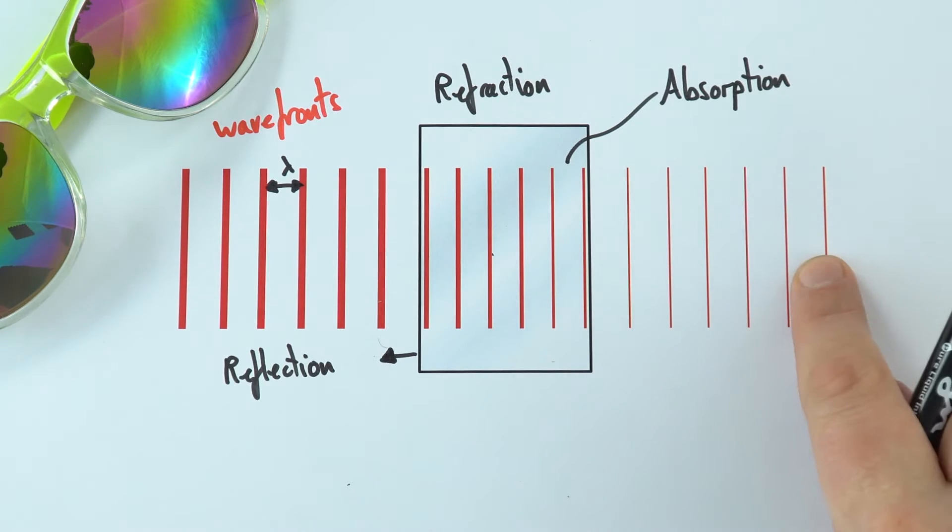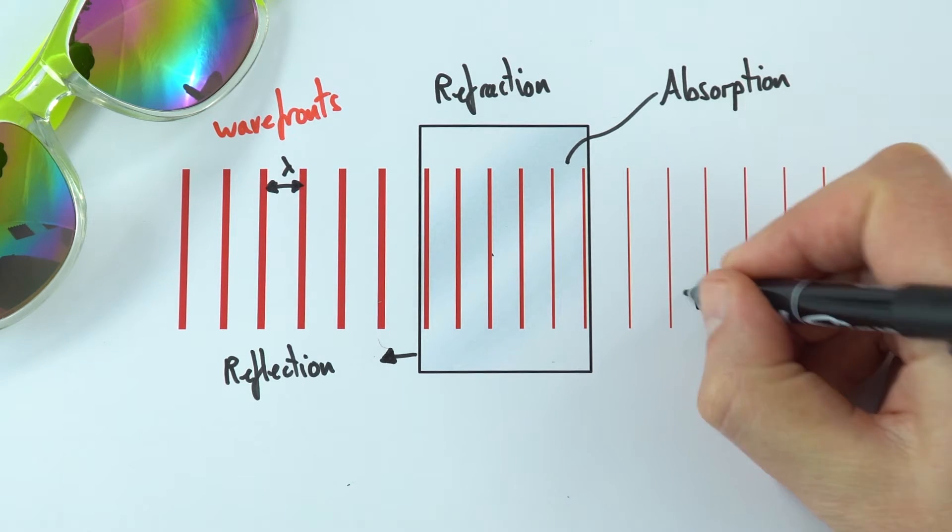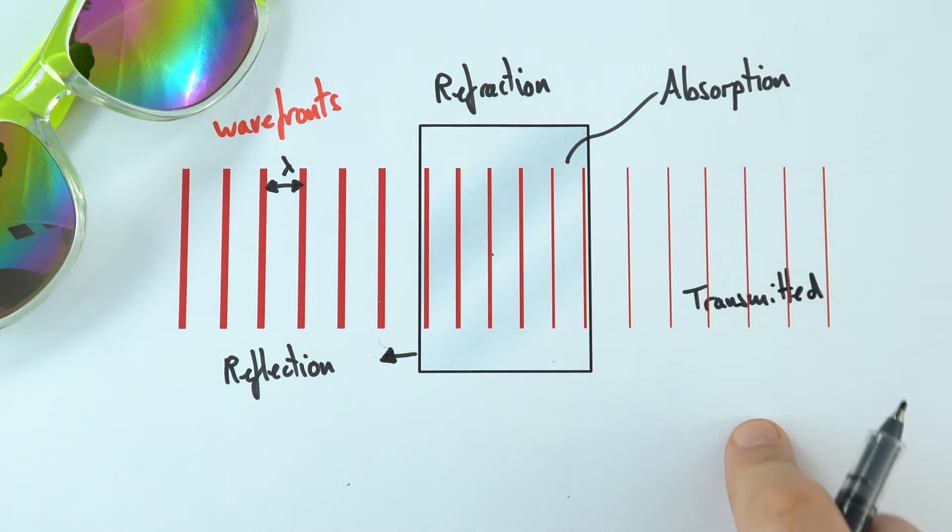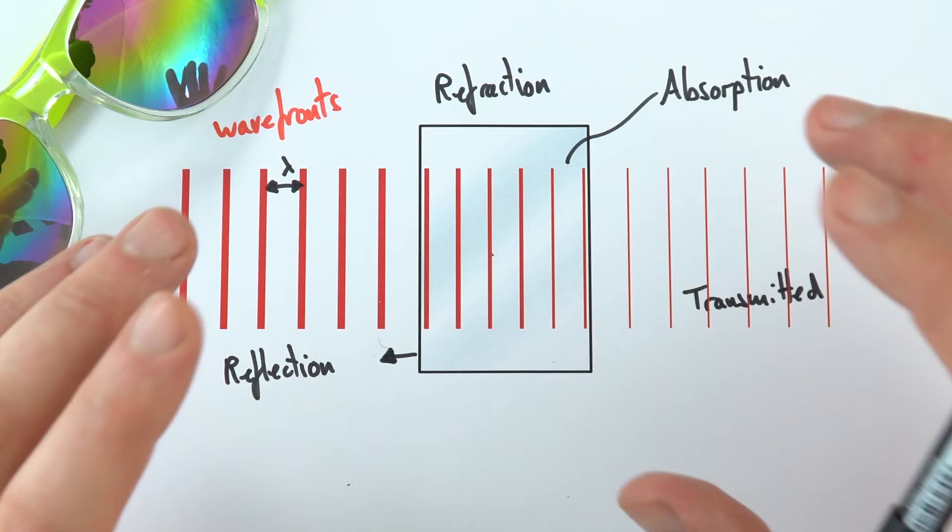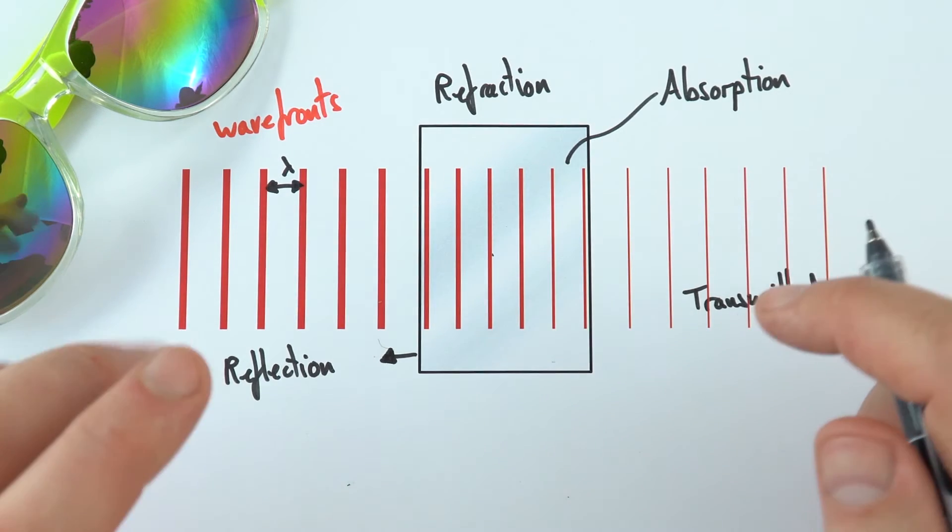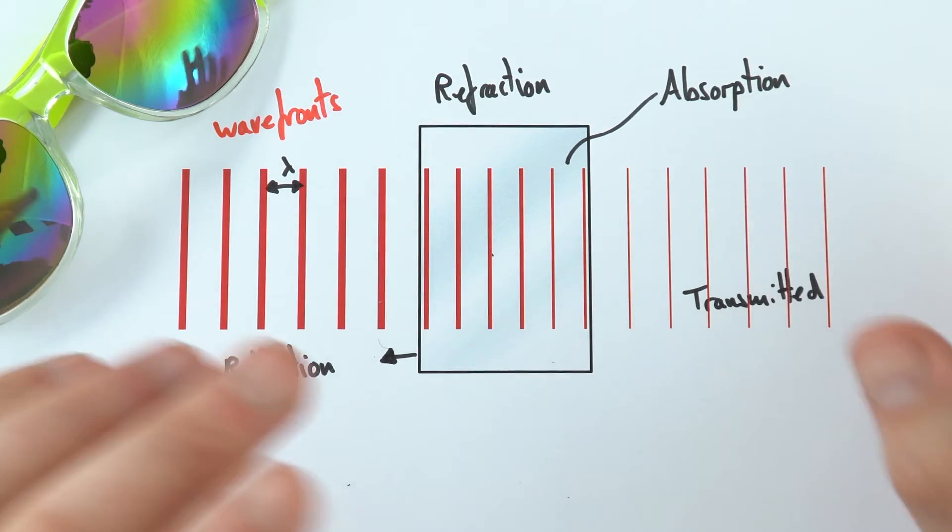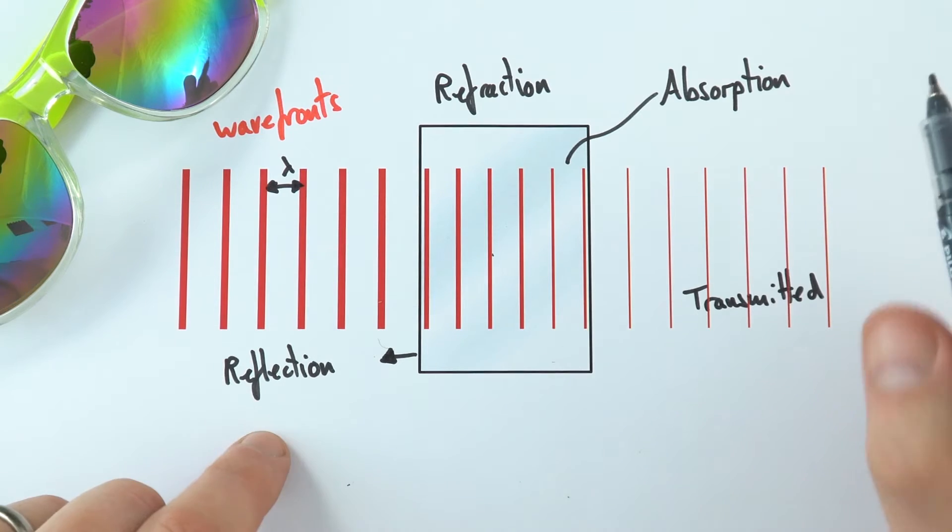And finally, what we have over here is light which is transmitted. And transmitted just means that it's been able to pass through something and it keeps going. So these are certain things that happen to all sorts of waves. So it might be a water wave, it might be an electromagnetic wave. So we might have reflection, refraction, absorption and transmission.